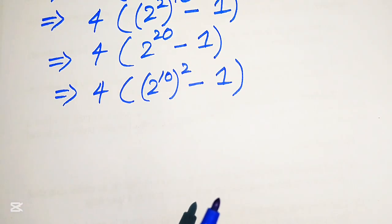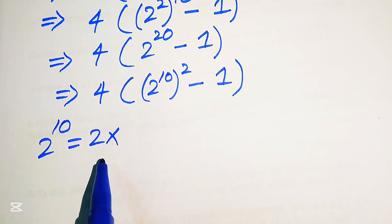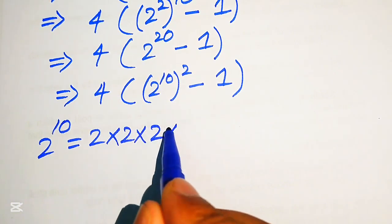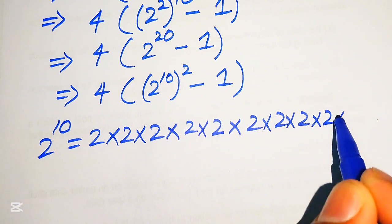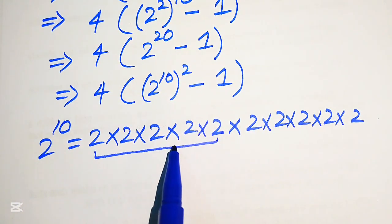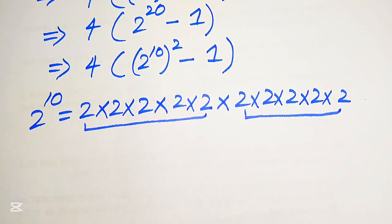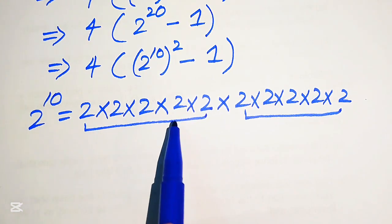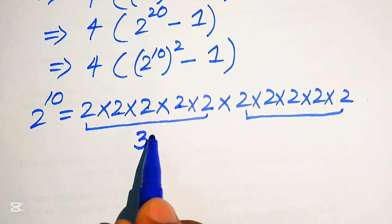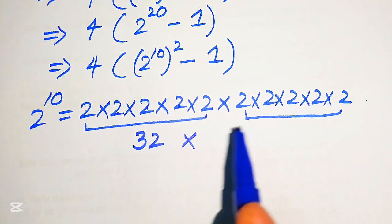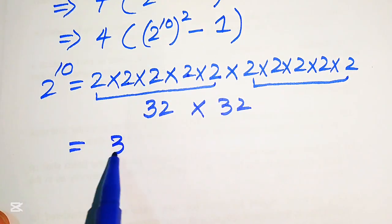Our next target is to find the value of 2 to the power of 10, which means multiplying 2 by itself 10 times. We group it as two sets of five 2s. The first five 2s multiply as 2, 4, 8, 16, 32, which means 2 multiplied 5 times gives 32. Similarly the second group of five also gives 32.